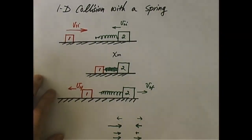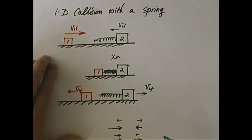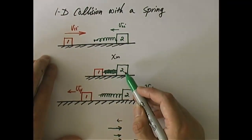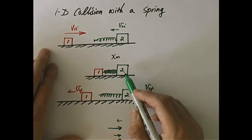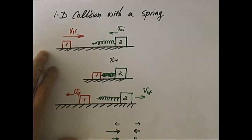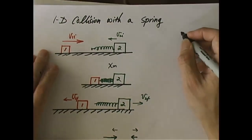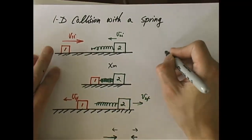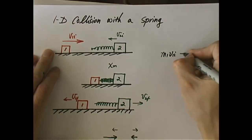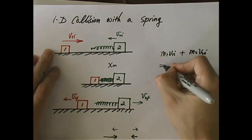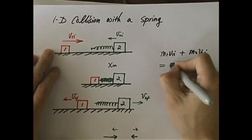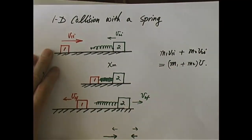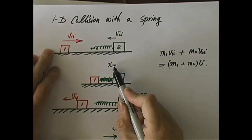So we can now apply conservation of momentum with a common speed at that moment. The velocity of object 1 and object 2 are exactly equal to each other at the moment of maximum compression — only at that moment. So: m1·v1_initial + m2·v2_initial = (m1 + m2)·v. This gives me an equation for v, but it doesn't give me an equation for x_maximum.